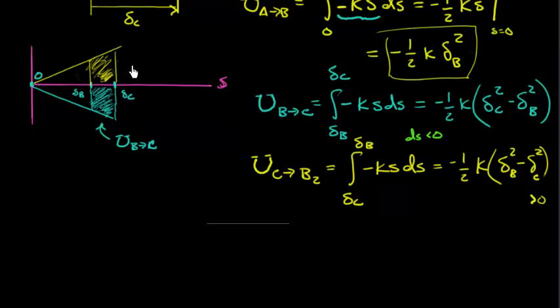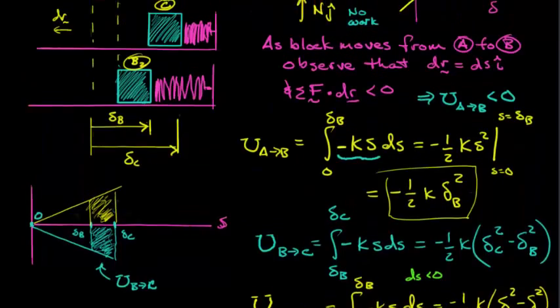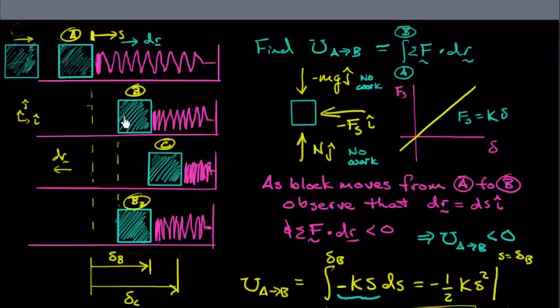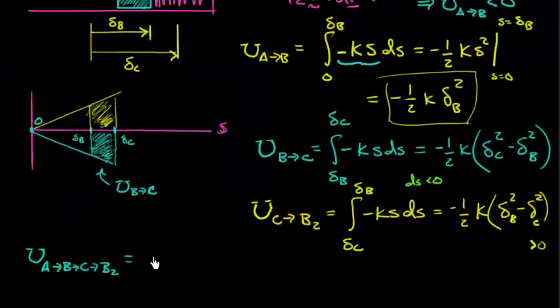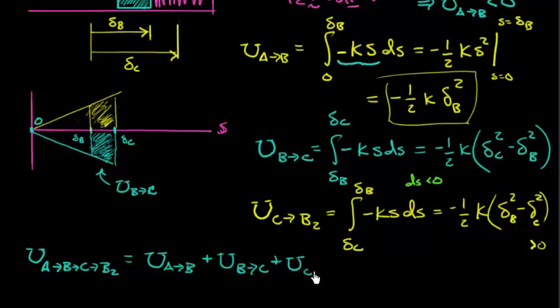Aha! So now what I want to do is one more little step here, I think one more little step. What if I consider the work in going from point A all the way to point B, continue on to point C, and then continue on to point B2? I'm going to call this the work in going from A to B2, but I do it along this path: A, B, C, B2. Again, if you want to see the picture up here, start at A, compress the spring, compress it at its maximum, and let it recoil. So I want to get from point A to point B2. Well, using the usual properties of integrals, this is just the work in going from A to B, plus the work in going from B to C, plus the work in going from C back to B2.